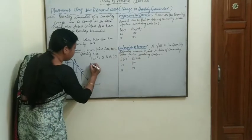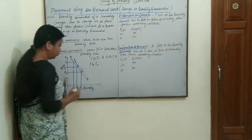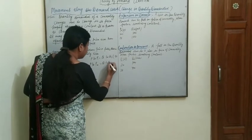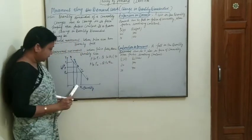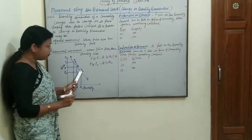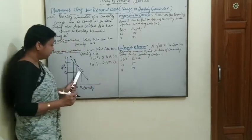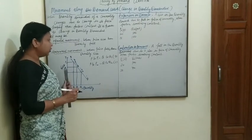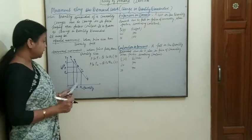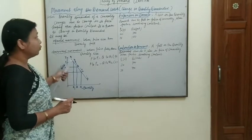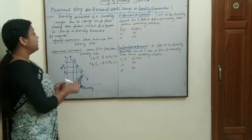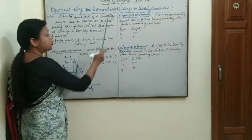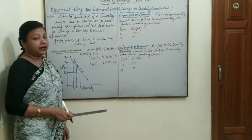Similarly, if price falls from P to P2, then quantity demanded rises from Q to Q2 — this is point C. This is a downward movement. When price falls and quantity demanded rises, this is a downward movement. This upward movement and downward movement is known as expansion in demand and contraction in demand.